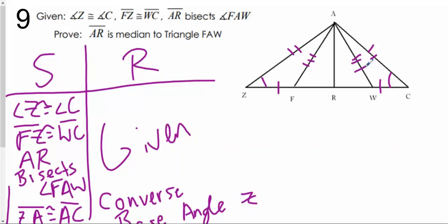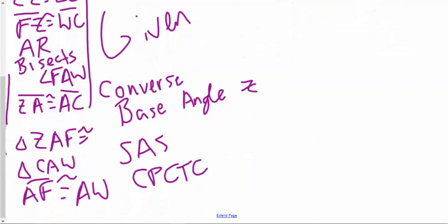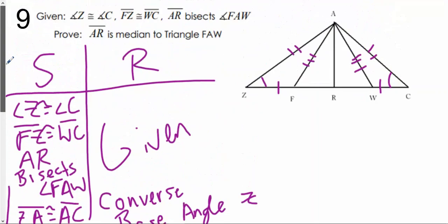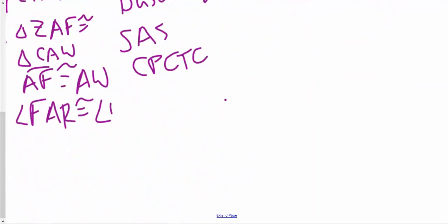And from there, I can now start to use my bisector. So if we say that AR bisects angle FAW, then that means that angle FAR, I have to extend it, angle FAR is going to be congruent to angle WAR. And that is a definition of angle bisector.